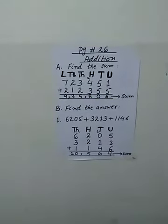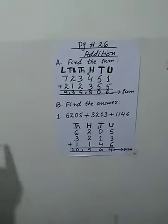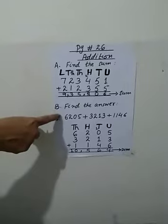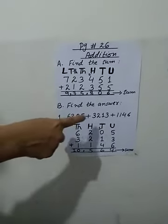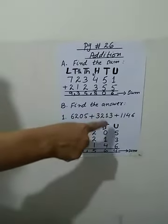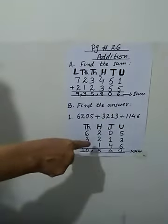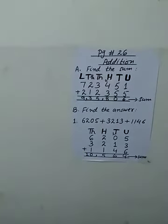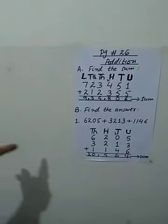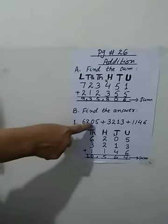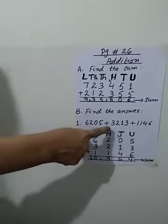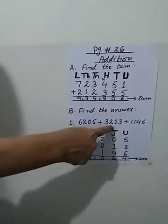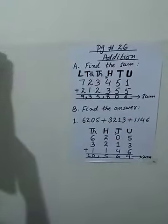Now see question number 2, which is in horizontal form. First of all, we arrange the numbers in vertical form and according to the place value. Question number 1 is: 6, 2, 0, 5 plus 3, 2, 1, 3 plus 1, 1, 4, 6.